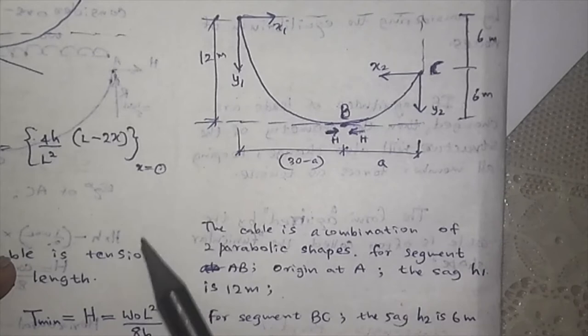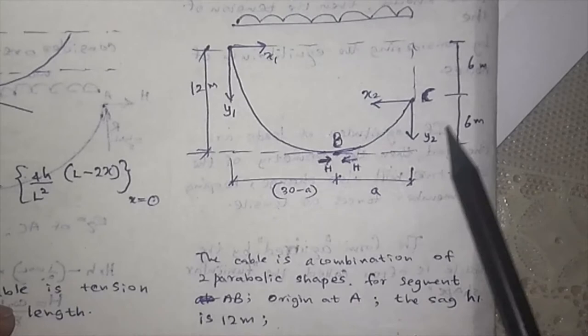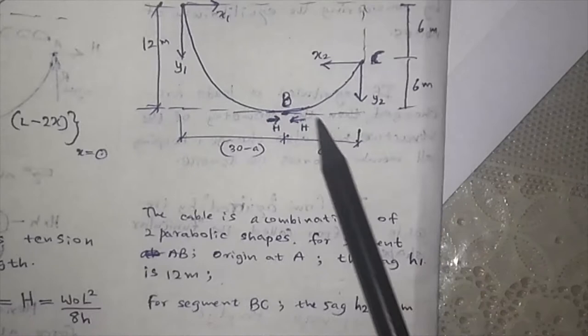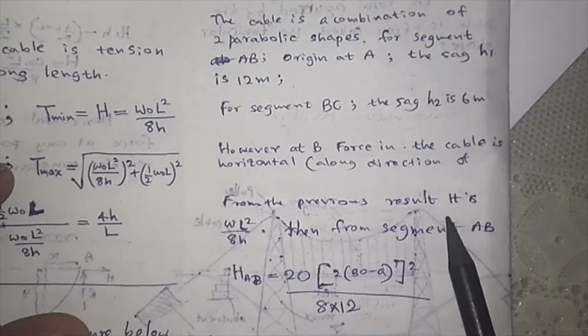Now we can start solving. The cable is a combination of two parabolic shapes. For segment AB, the origin is at A and the sag H1 is 12 meters—the entire sag is 12 meters. For segment BC, the sag is 6 meters because it has only this amount of sag.